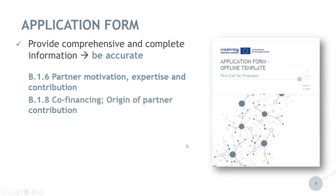In section B.1.8, partners need to define the origin of their contribution to the project budget — this is the 20% partner contribution. Make sure that the source of partner contribution indicated in this section is correct. Co-financing of a partner can be secured through the partner's own resources or through external funds, or a combination of these two options. For State Aid purposes, it is relevant to indicate if partners intend to use external public financial contributions to their budget, for example ad-hoc co-financing schemes set up at the national or regional level for participation in Interreg projects — so-called match funding.